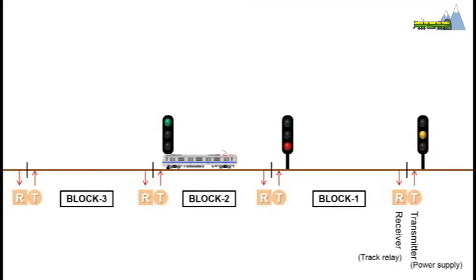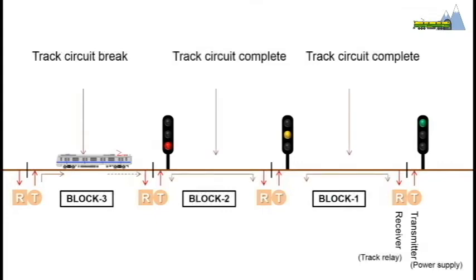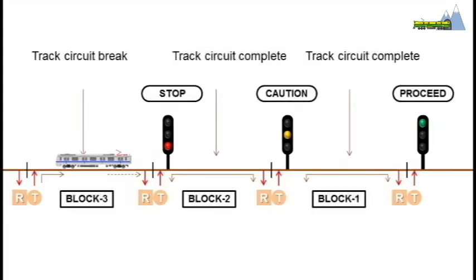As the train exits the first block, the signal aspect changes to caution indicating that the next train can enter the block, but it must proceed with caution at slow speed and be prepared to stop. When the train exits the second block, the aspect at the first signal turns green to allow entry of the following train at maximum permitted speed.